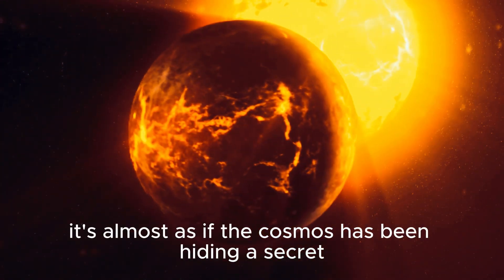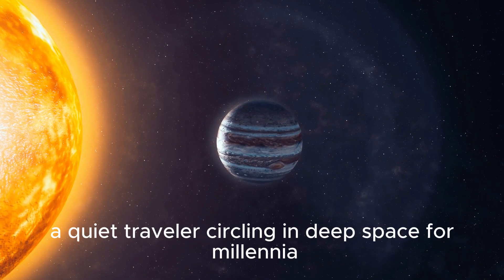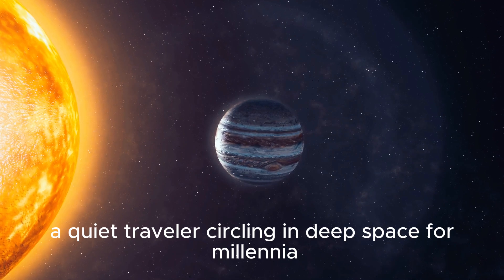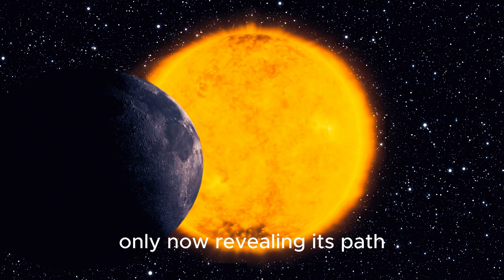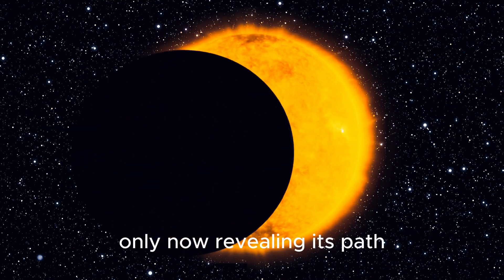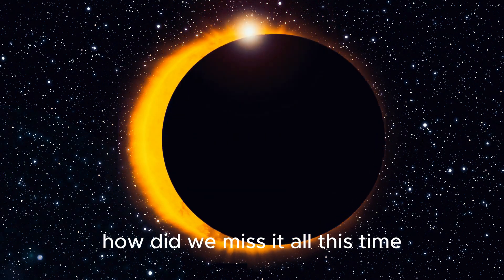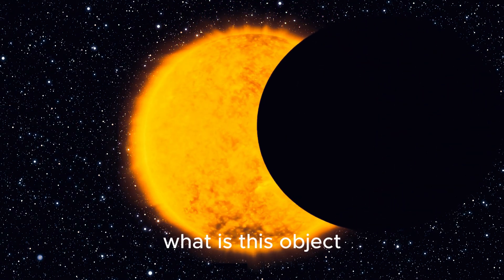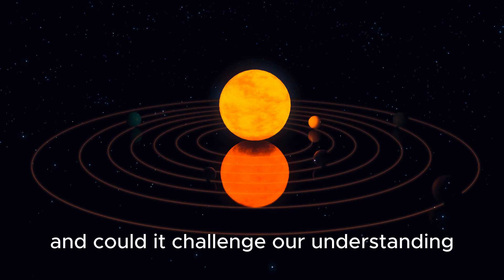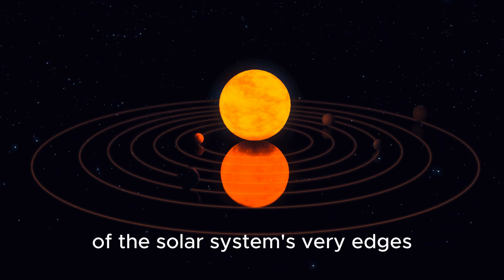It's almost as if the cosmos has been hiding a secret from us, a quiet traveler circling in deep space for millennia, only now revealing its path. How did we miss it all this time? What is this object, and could it challenge our understanding of the solar system's very edges?